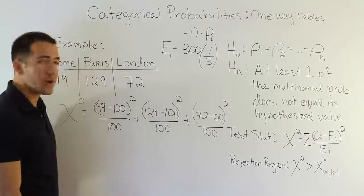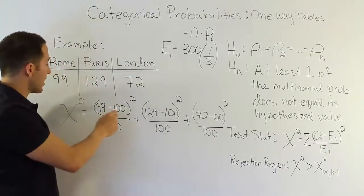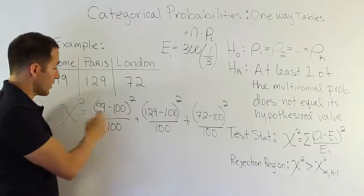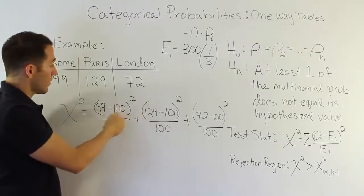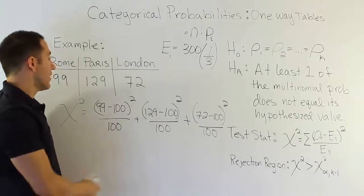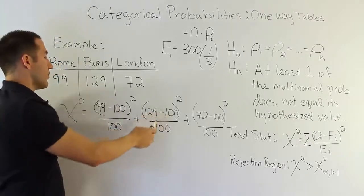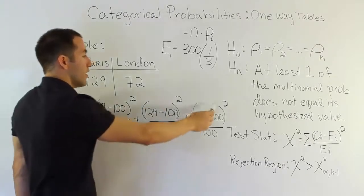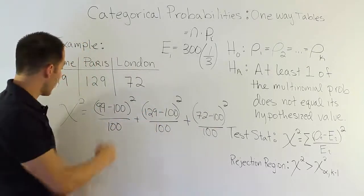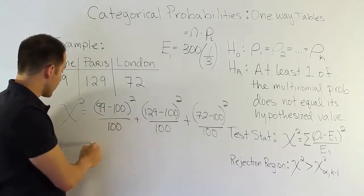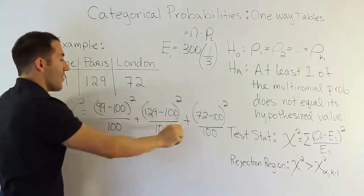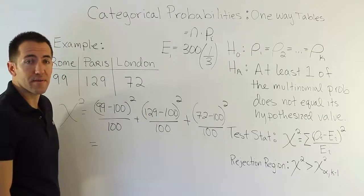The rest is really just calculator work. For Rome: 99 − 100 = −1, and (−1)² = 1, so the first fraction is 1/100. For Paris: 129 − 100 = 29, giving 29²/100. For London: 72 − 100 = −28, giving 28²/100. You work out each of these three fractions and add the results together to get the chi-squared test statistic.